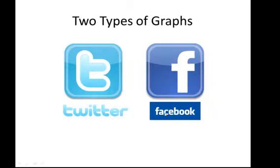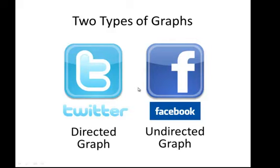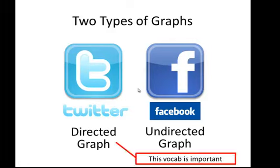There are two main types of graphs, and this vocabulary is important. We can have a directed graph and an undirected graph. So Twitter is an example of a directed graph. We'll look at that now.